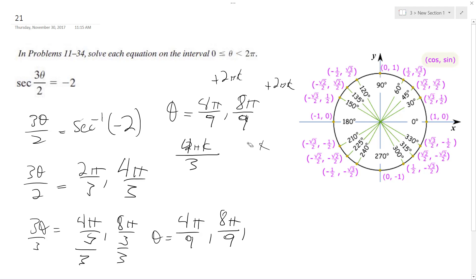Well, that's not right. I need a common denominator, times 3, so 12 pi k over 9.